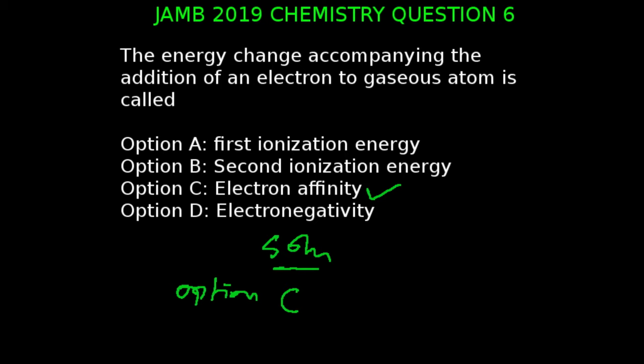An energy change accompanying the addition of an electron to a gaseous atom is called? The correct answer to this question is option C, which is electron affinity. Electron affinity is the energy change accompanying the addition of one mole of electrons to one mole of gaseous atoms or ions.